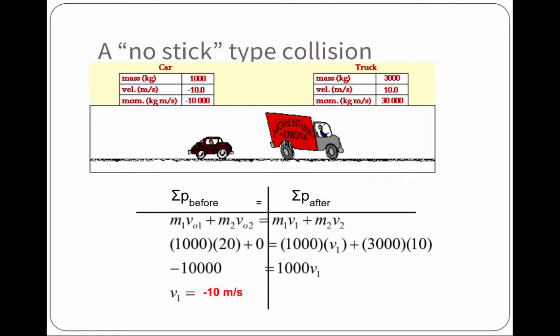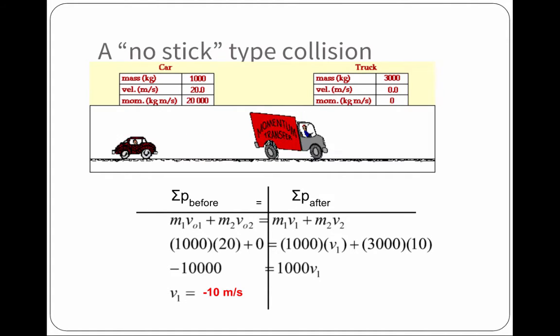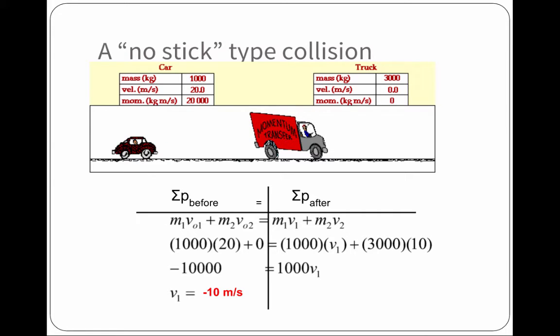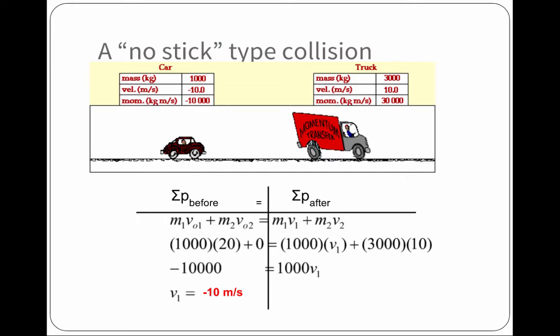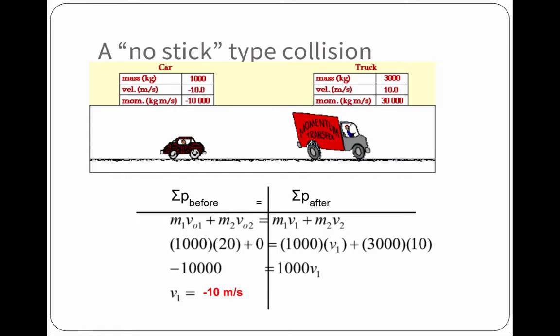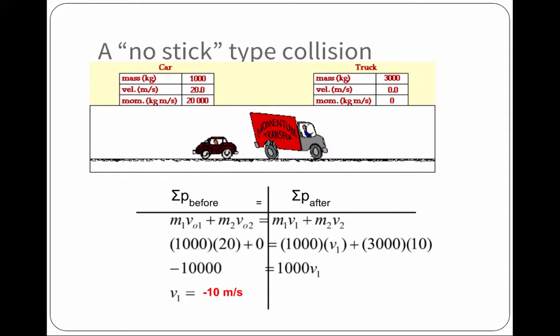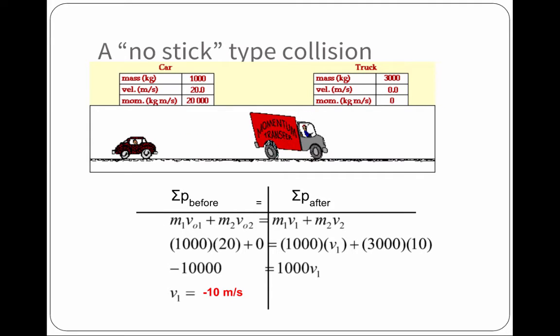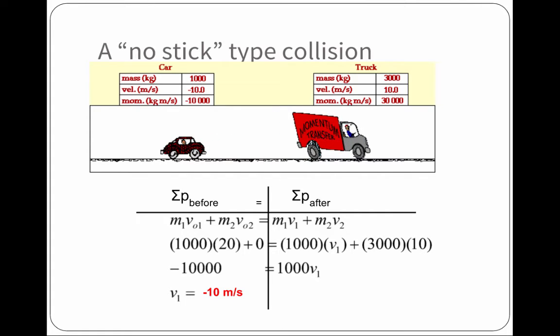So, a no-stick type of collision, right? The momentum of each car, the car and the truck, they have mass, they have velocity. So, the total momentum before is equal to the total momentum after. The mass times the velocity of the cars, a thousand times twenty, plus the mass times velocity of the truck, which was zero...